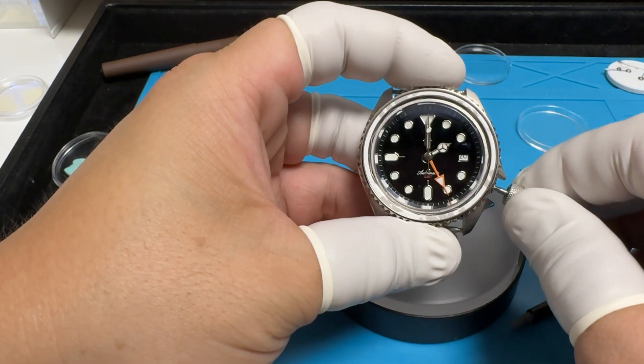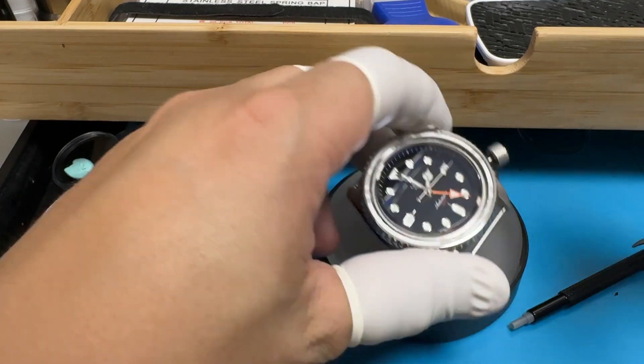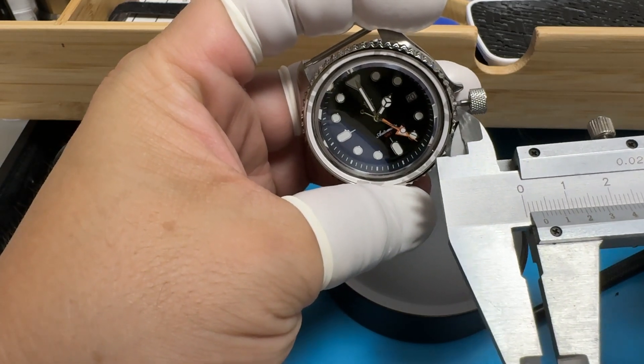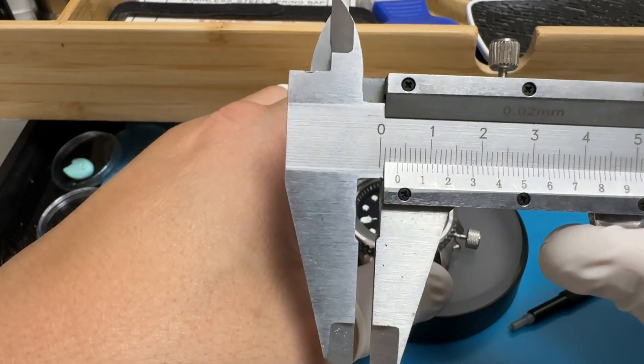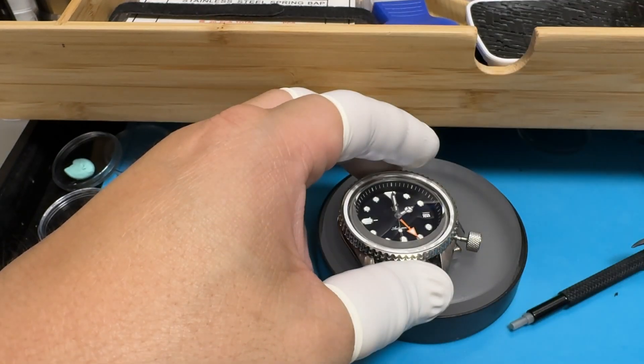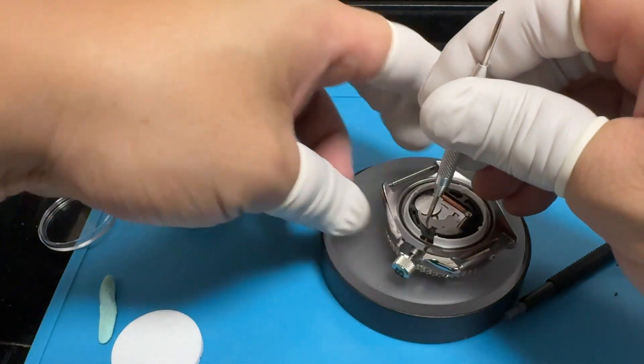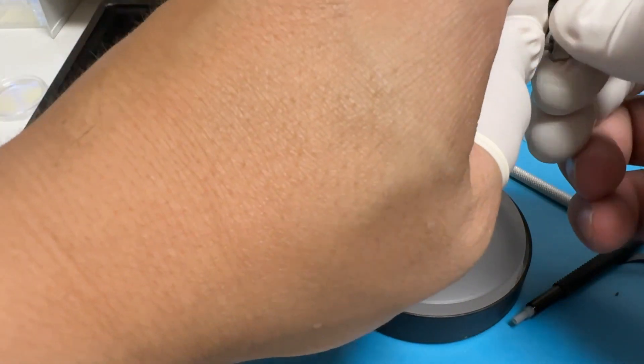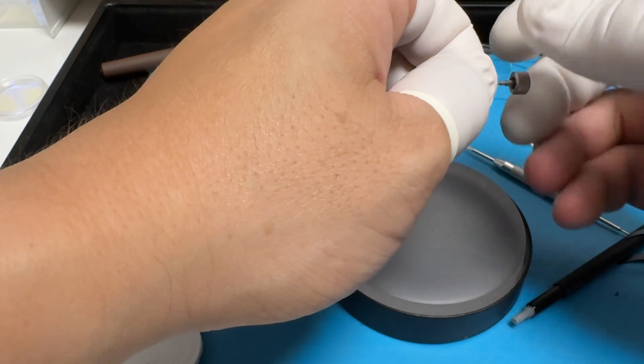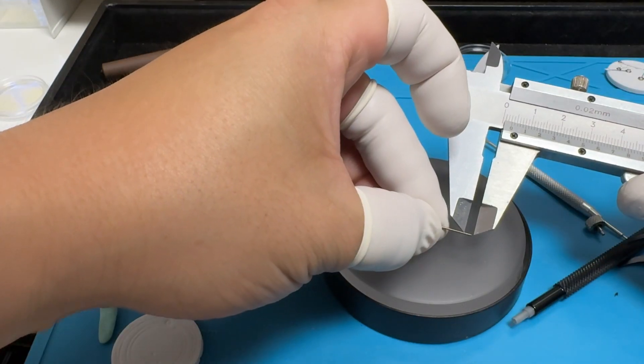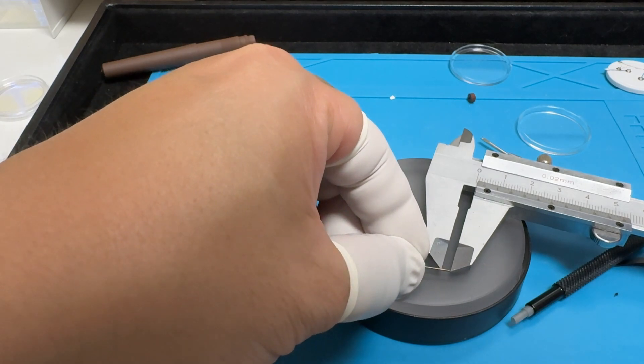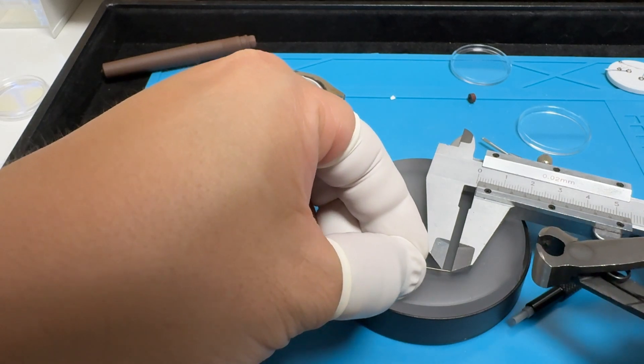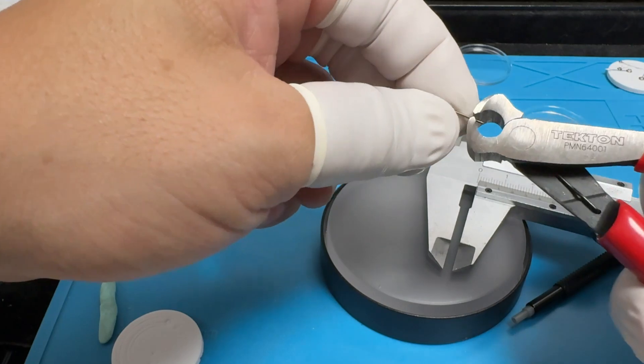Here I'll use a pair of calipers to measure from the base of the crown to the opening where the stem comes out, and it's roughly about three and a half to four millimeters that we have to trim off. With the crown pulled out one notch, we're going to insert the sharp object, pull up the stem, and now remove the crown from the crown stem. I measured about 3.5 millimeters, so I'm going to use the calipers as a guide.